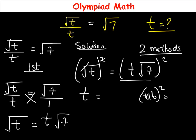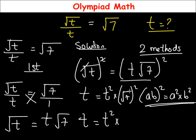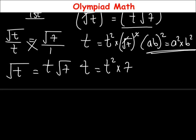Now if you have (ab)², this is equal to a² times b². Applying this principle, (t√7)² becomes t² times (√7)². The square cancels the square root, leaving 7. So we have t is equal to t² times 7, which is 7t².